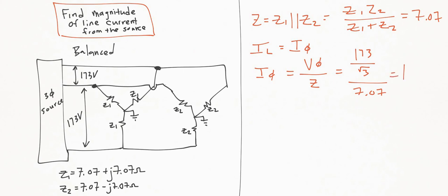And since I_line and I_phase are the same, I_line is equal to also 14.1 amps, and that's what I got. So did you guys get the same answer? Let me know in the comments below, and until then, enjoy engineering!